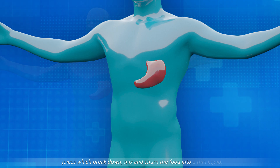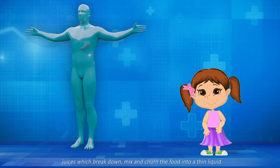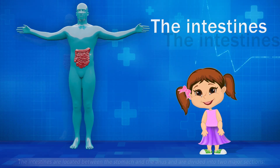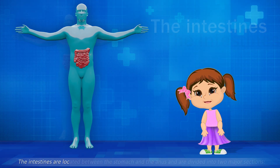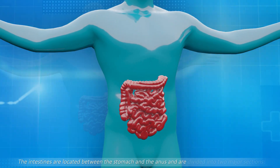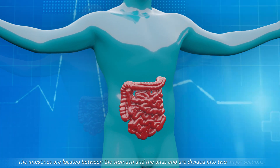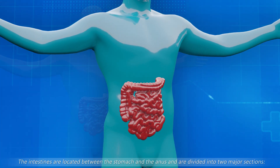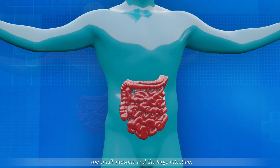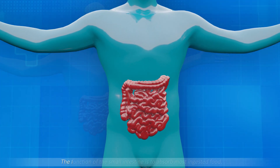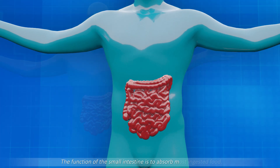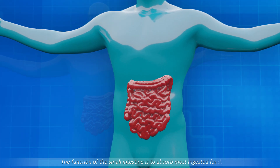The intestines. The intestines are located between the stomach and the anus and are divided into two major sections: the small intestine and the large intestine. The function of the small intestine is to absorb most ingested food. The large intestine is responsible for absorption of water and excretion of solid waste material.